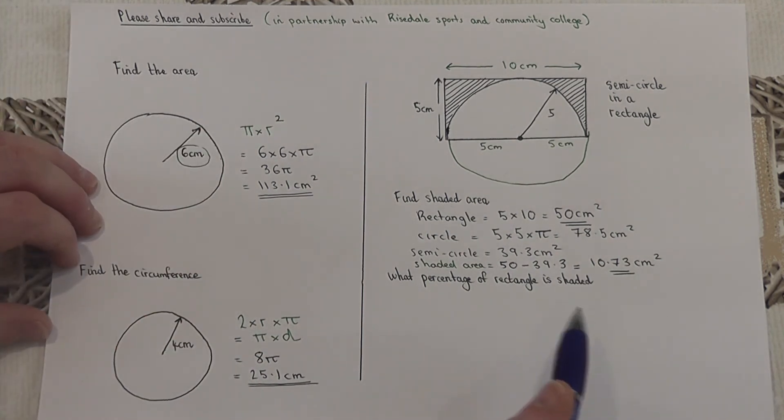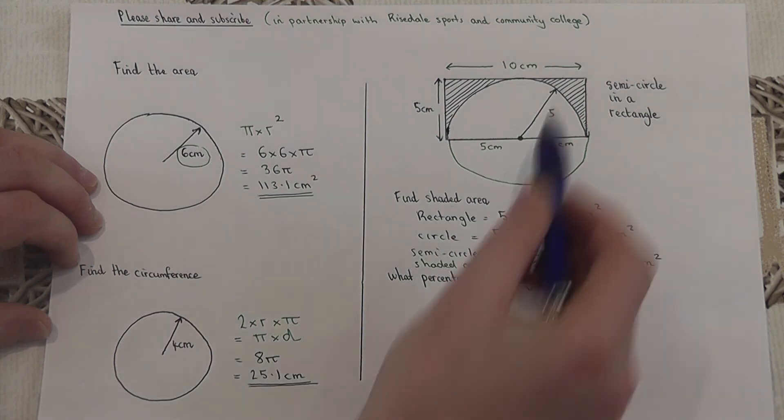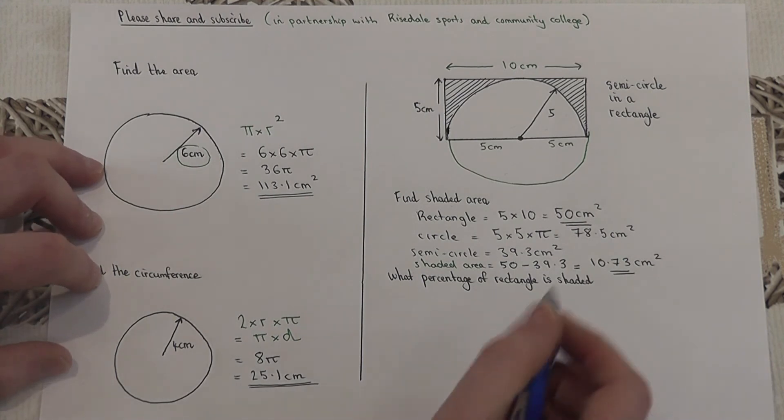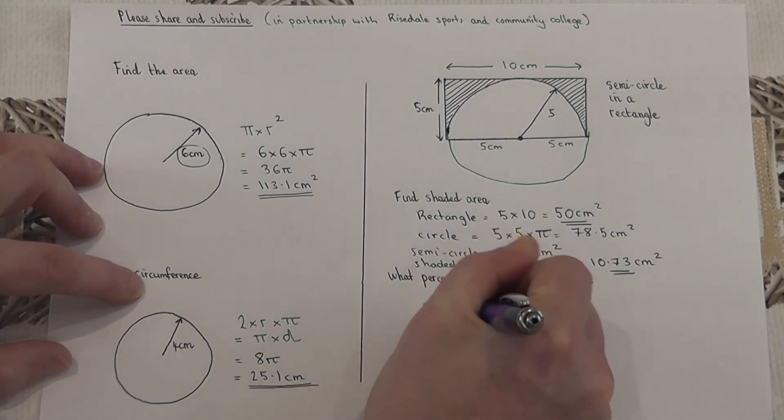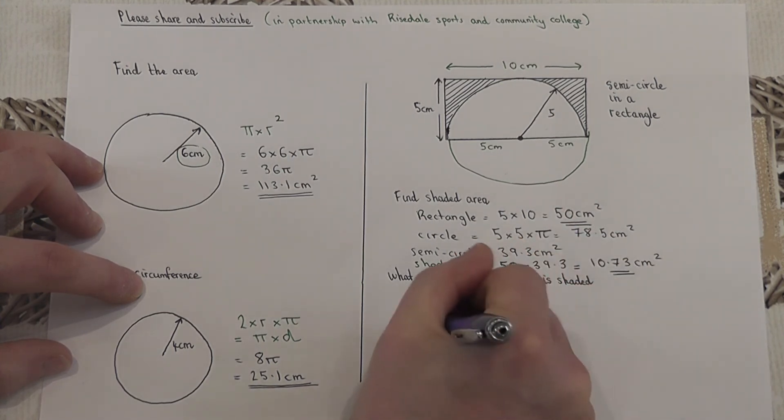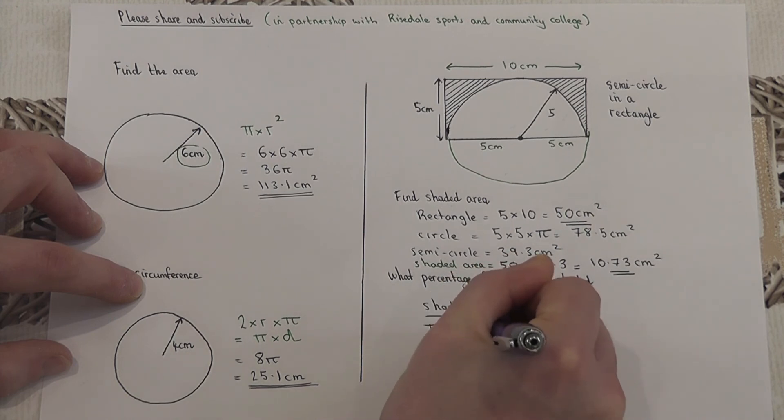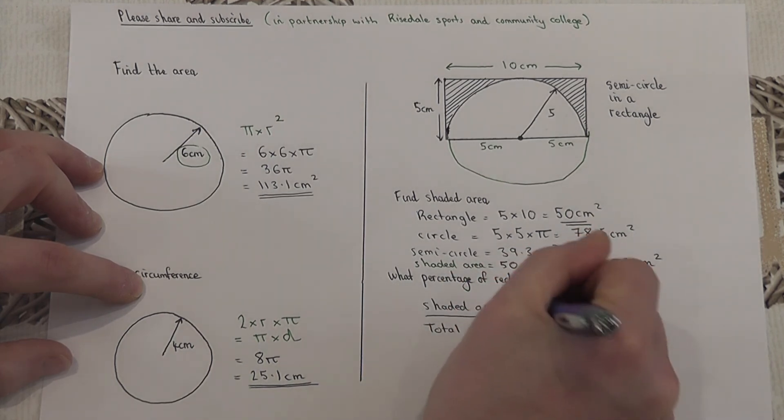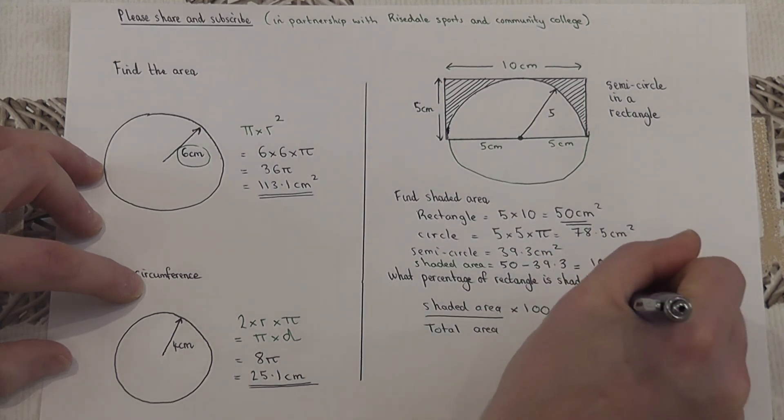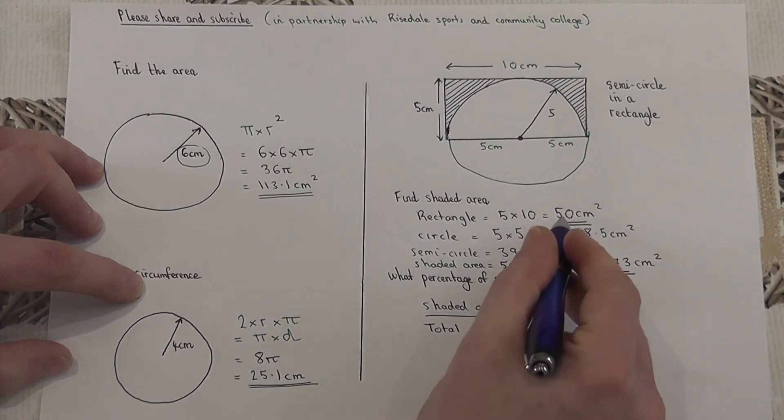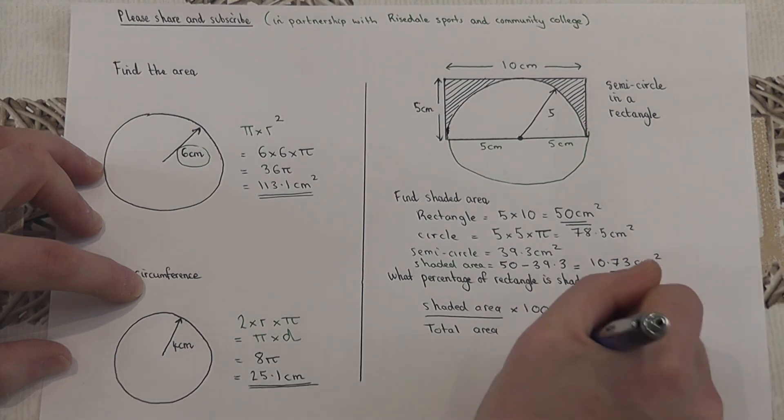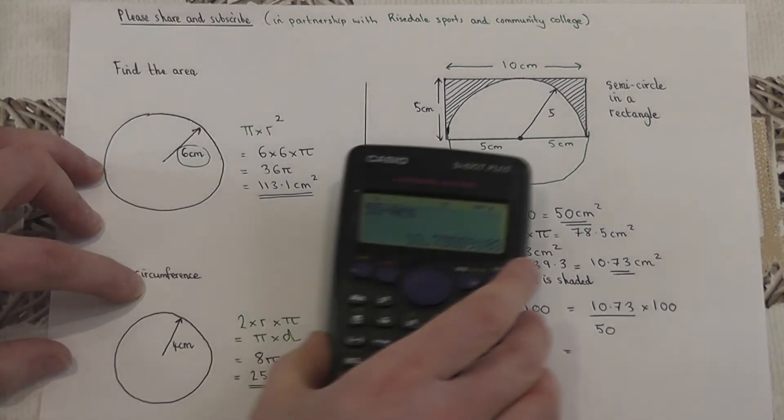Now, as an aside, they sometimes ask what percentage of a shape is shaded. Now, to do this is quite a simple calculation. We do the shaded area, as asked in the question, divided by the total area of the rectangle, and we times by 100. So I would do the shaded area divided by the total rectangle times by 100.